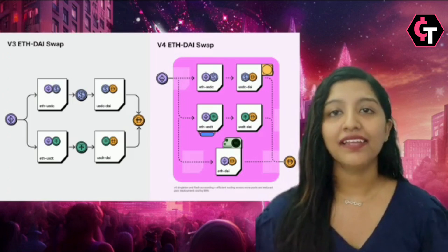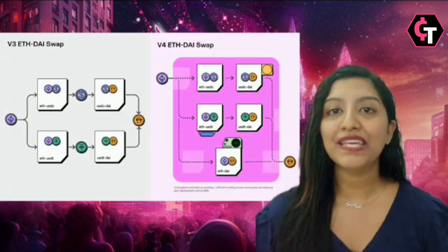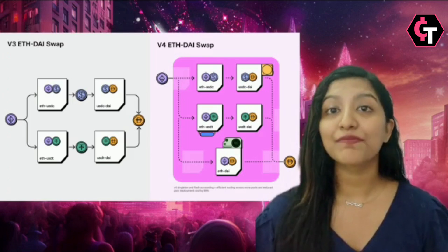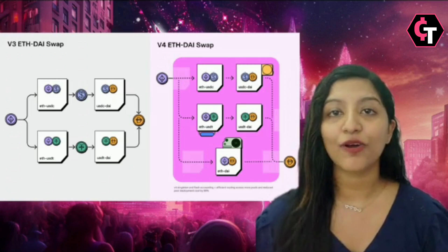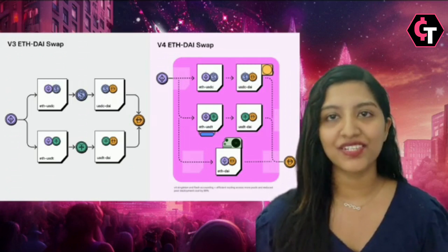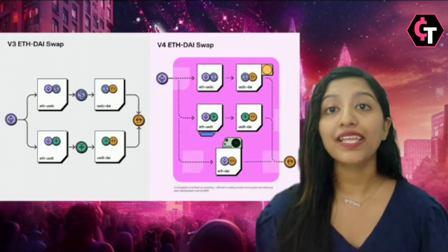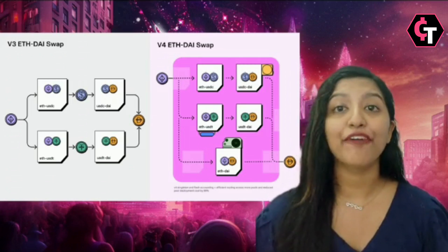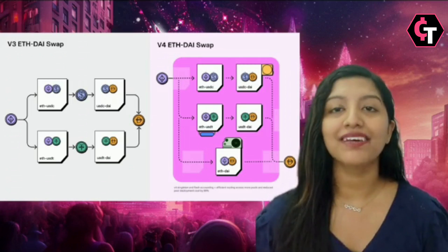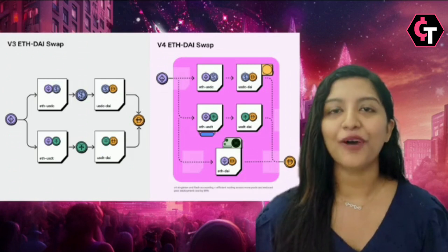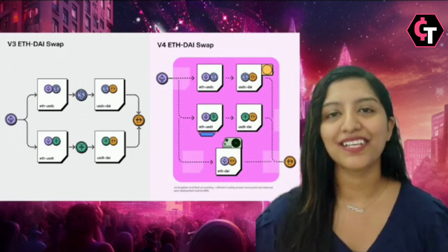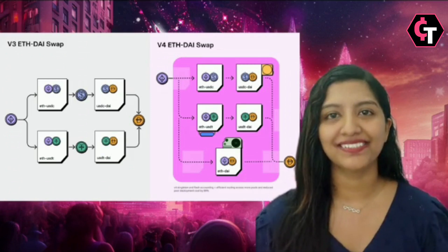Uniswap V4 doesn't stop at hooks — it brings other exciting enhancements. Dynamic fees provide flexibility by adjusting fees based on market conditions, and pool creation costs have been reduced by a staggering 99% since all pools now reside within a single contract.